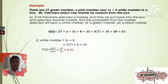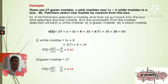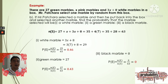For the green marble, there are 27 green marbles. The probability is 27 divided by 63, which is approximately 0.43. For the black marble, there are no black marbles in the box, so the cardinality of that event is zero. Zero divided by 63 equals zero — it is impossible to select a black marble from this box.